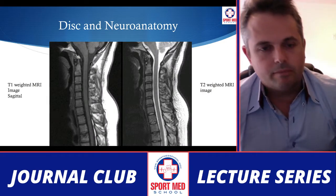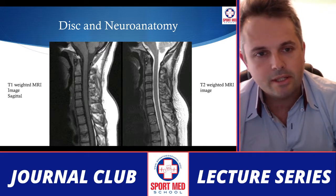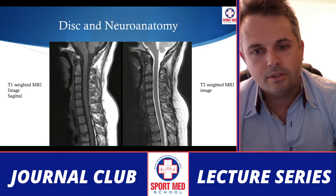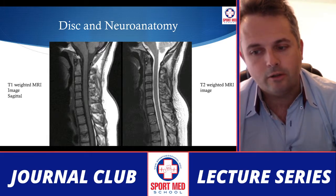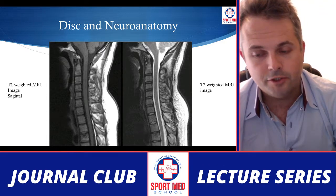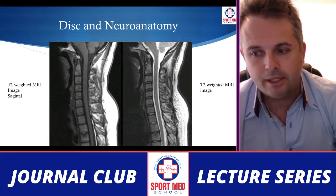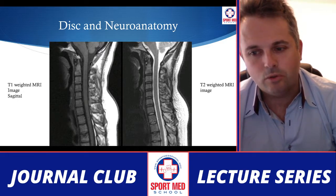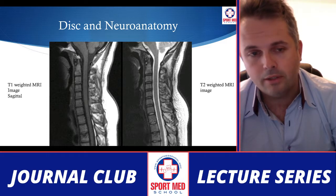Now we'll talk about disc and neuroanatomy with respect to the cervical spine. This is an MRI — both T1 and T2 weighted images. On the T2 weighted image, between the vertebral body and the spinous processes, you'll see a dark grayish structure in the middle — that is your spinal cord tissue — surrounded by white cerebrospinal fluid in the arachnoid space. The vertebral bodies appear as a lighter gray, and the thin oval-like discs are visible. With degenerative disc disease, those discs can push back and compress the nerve roots or the spinal cord itself.